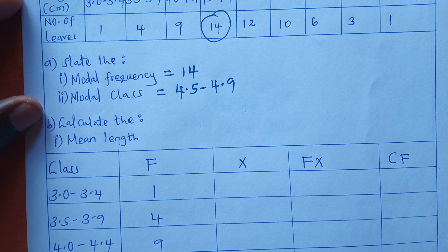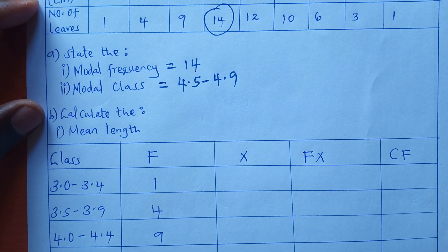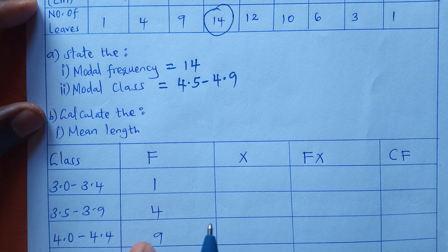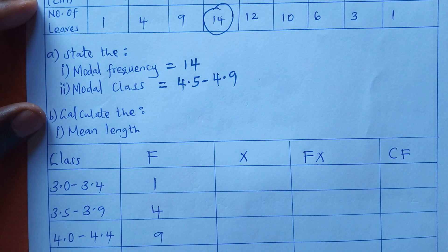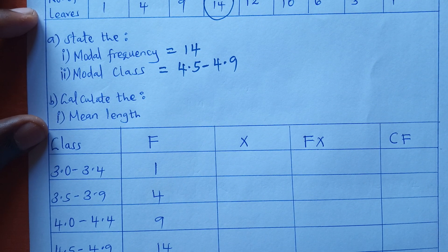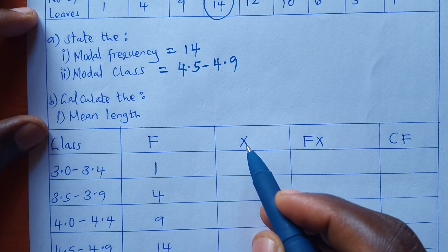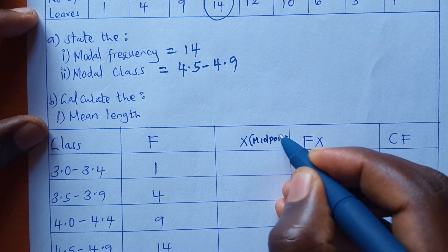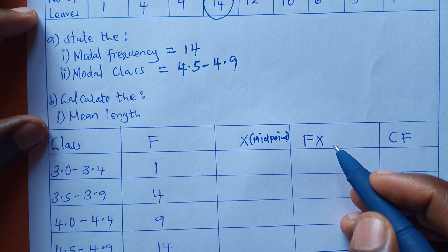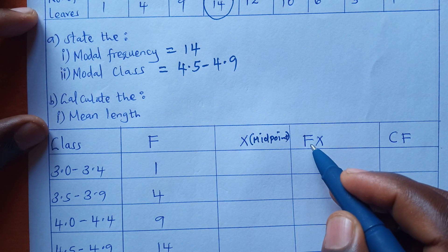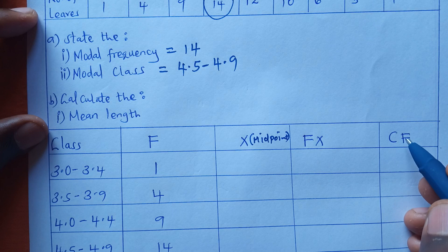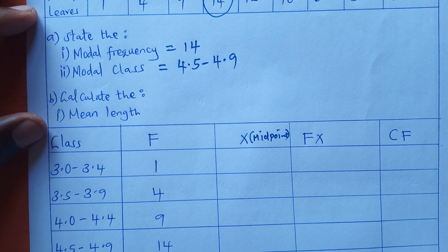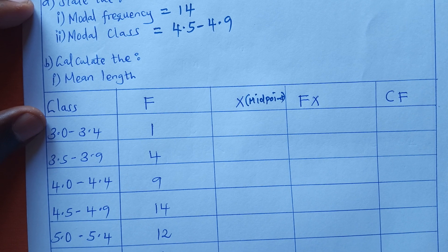Part B of this question requires one to calculate the mean length. To calculate the mean length, we must come up with a table that has columns for class, frequency, midpoint (x), f of x — which is the product of frequency and midpoint — and cumulative frequency (cf). I have already filled in the class and frequency columns.